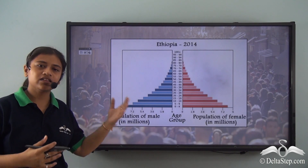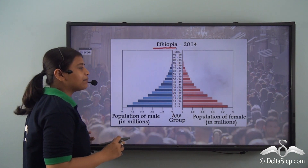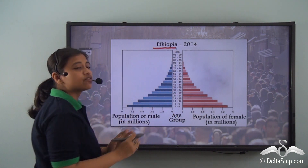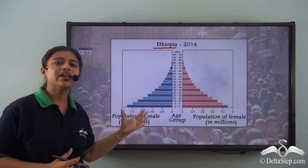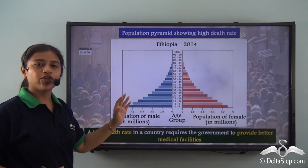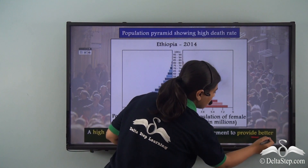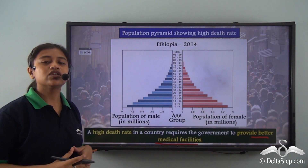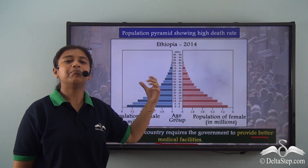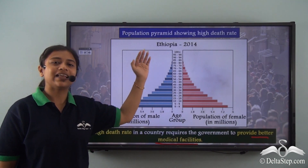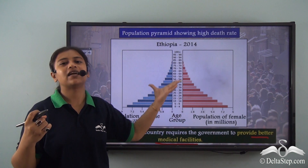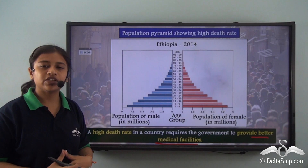Now let us take an example of another country — Ethiopia. From the population pyramid of Ethiopia, we can see that the pyramid is increasingly narrowing as we go up. With a high birth rate and high death rate, this population pyramid represents an underdeveloped country. For a country like Ethiopia, the government needs to focus more on strengthening its medical facilities so that people have better access to healthcare and the problem of high death rate and birth rate can be solved. They also need to provide better awareness programs about the negative impacts of high death and birth rates.